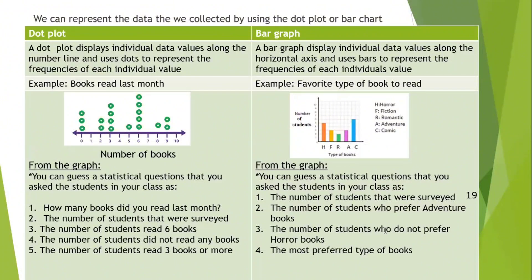Number two, the number of students who prefer adventure book. Adventure, three. Three, the number of students who don't prefer horror books. I have two ways. Either I add all these numbers, or I already got the number of students who I surveyed, they are 19. I'll do 19 minus those who prefer the horror book, they were five. Equals 14. So these are the ones who don't prefer to read the horror books.